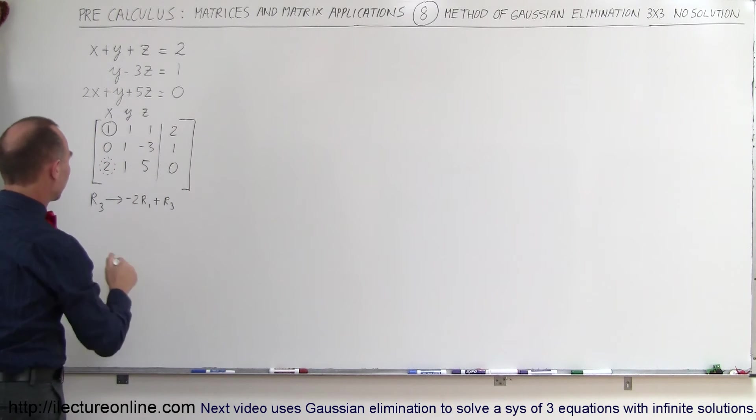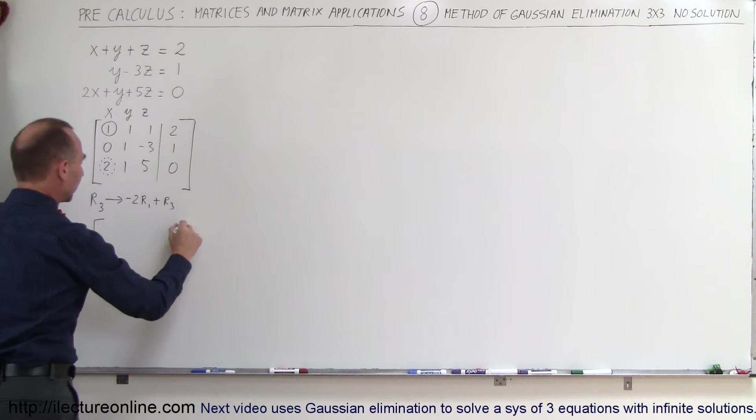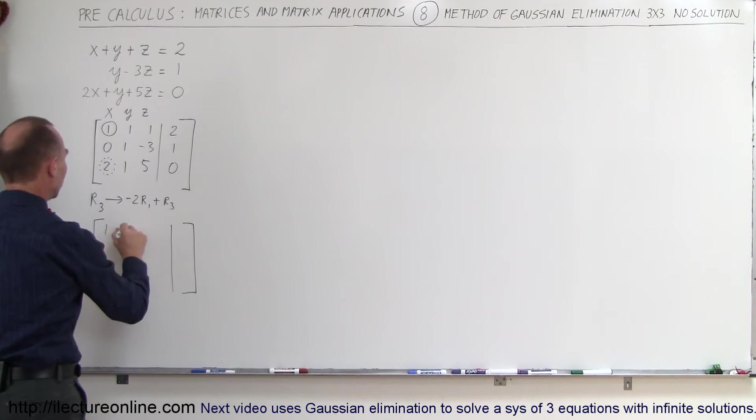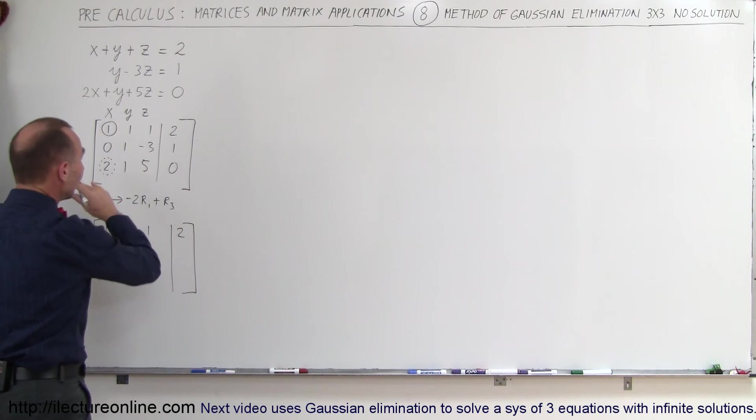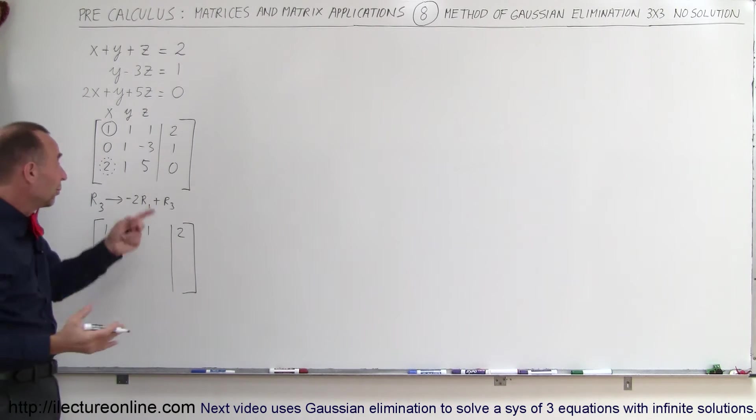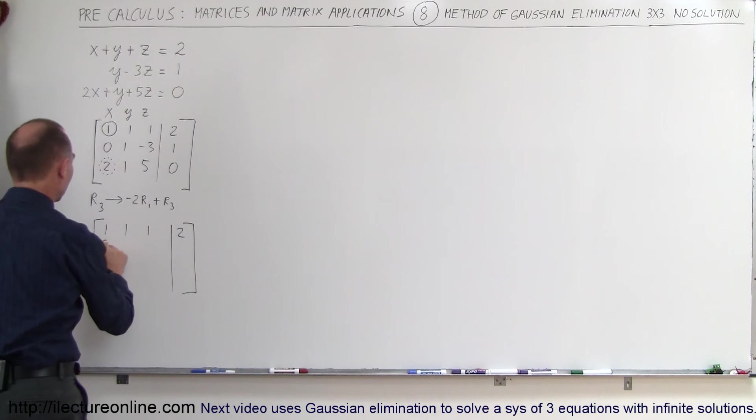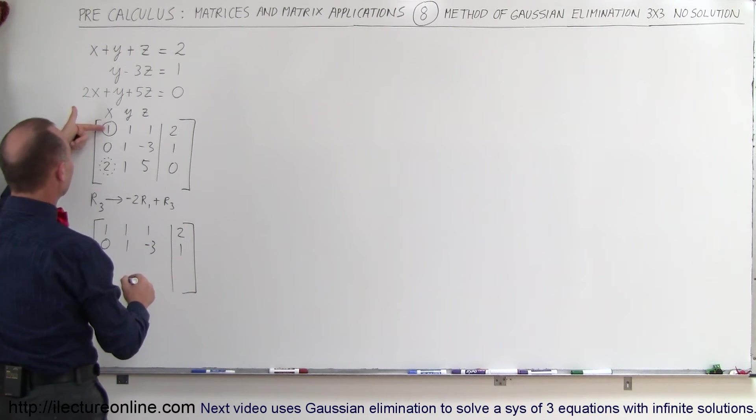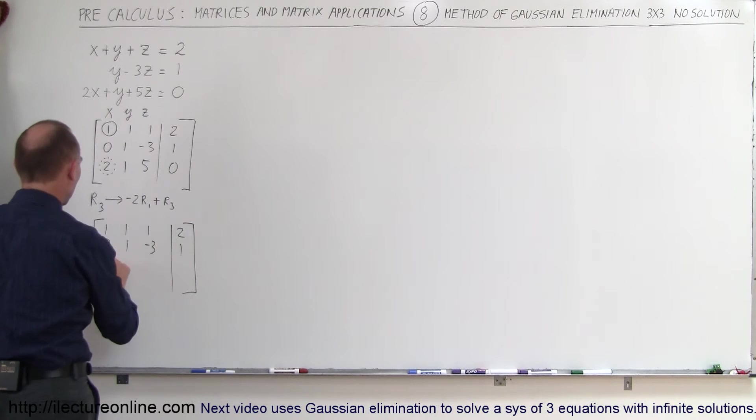Our new matrix will now become the following. Notice that the first row does not change: 1, 1, 1, and a 2. The second row doesn't change because we already have a 0 there. So this is 0, 1, negative 3, and 1. And the third row, negative 2 times 1 is negative 2, added to 2, that becomes a 0.